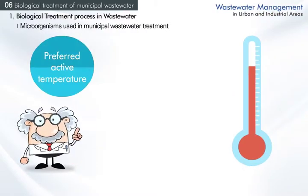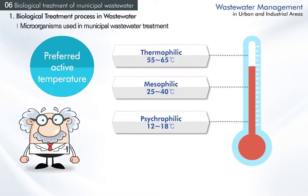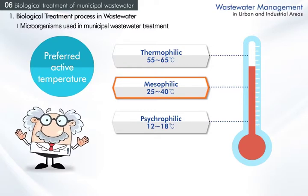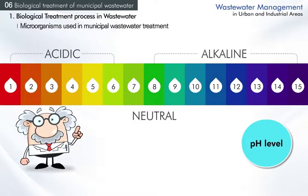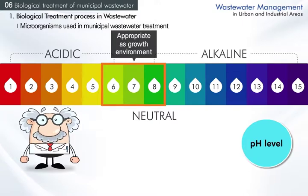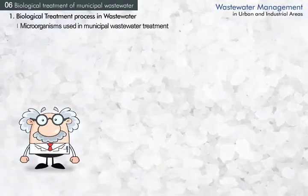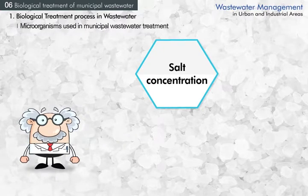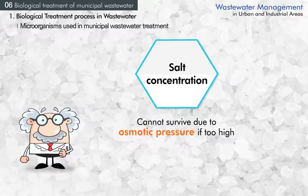Depending on the active temperature they prefer, microorganisms can be divided into psychrophilic bacteria, mesophilic bacteria, and thermophilic bacteria. Most microorganisms are mesophilic bacteria, but thermophilic bacteria can survive near deep sea craters or hot springs. pH condition is also an important element — most microorganisms grow at pH 6 to 8, though some survive below pH 4 or above pH 10. Too high salt concentration destroys cell membranes due to osmotic pressure.